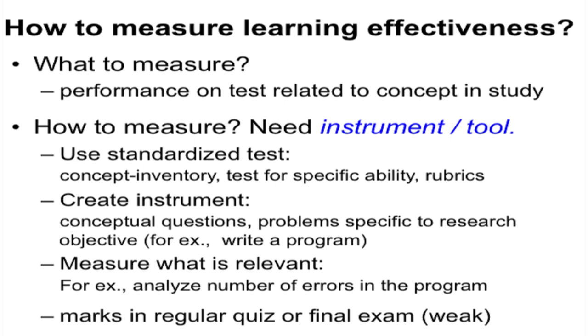The advantage of using a standardized test is that you can use it without inventing it on your own or having to validate it all over again. It is like: each time you want to measure current, you do not start creating your own ammeter. You find a standardized ammeter, make sure it measures the range of current you want, and connect it in your circuit. The slightly challenging part might be finding these instruments, but literature will help. If you are continuing with paper writing, our mentors will be able to help you find a standardized test once they know your goal.